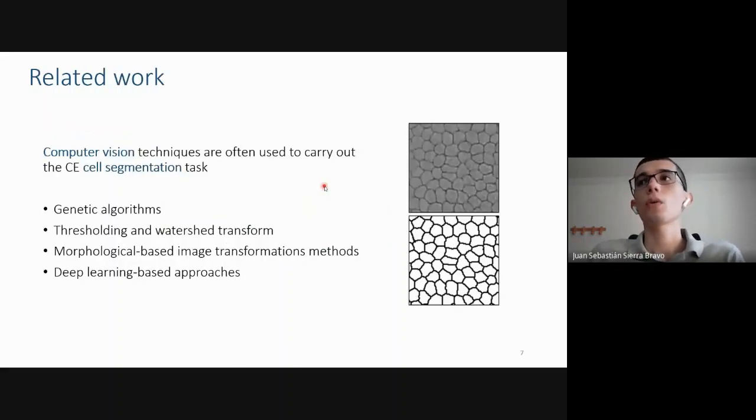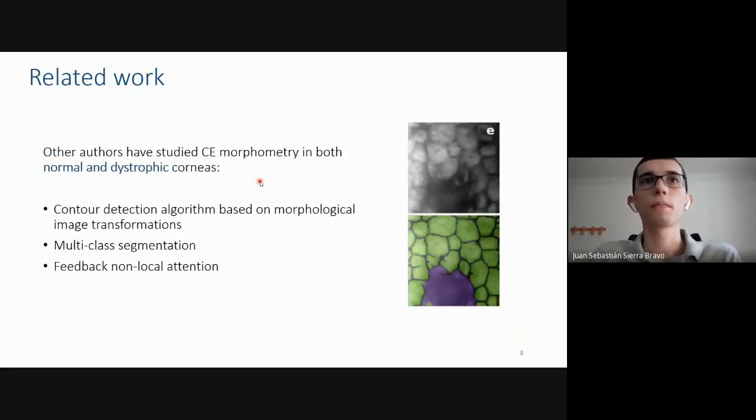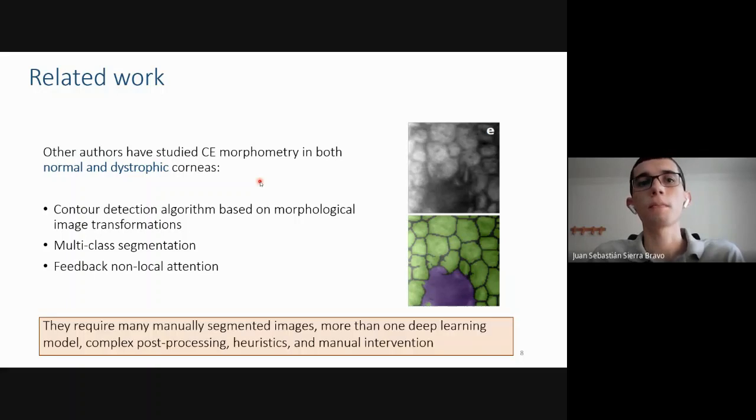To analyze the cornea endothelium manually is a cumbersome and time-consuming task. For this reason, computer vision techniques are often used to carry out this cornea endothelium cell segmentation task. However, these methods are not immediately applicable in cornea endothelium images with pops dystrophy. Other authors have studied the cornea endothelium morphometry in both normal and dystrophic corneas, but these methods require many manually segmented images and more than one deep learning model, complex post-processing heuristics, and even manual interface intervention to obtain accurate results.